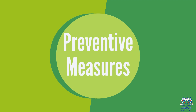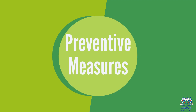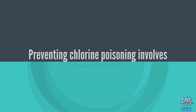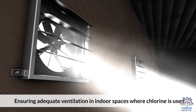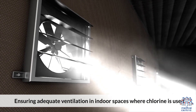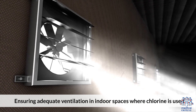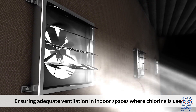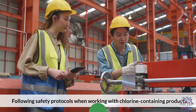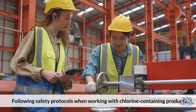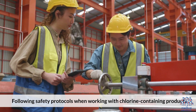7. Preventative Measures. Preventing chlorine poisoning involves proper ventilation — ensuring adequate ventilation in indoor spaces where chlorine is used — and safe handling, by following safety protocols when working with chlorine-containing products.